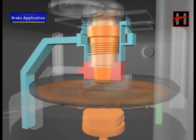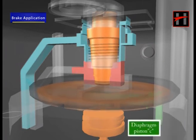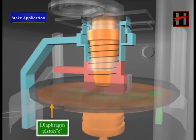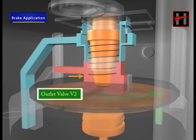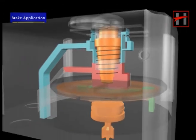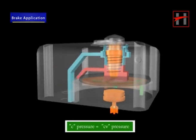The developing C pressure and the thrust of the compression spring causes the diaphragm piston C to return to its mid position. The inlet valve seat V1 now closes. The outlet valve seat V2 stays closed. The pressures C and CV are equal.